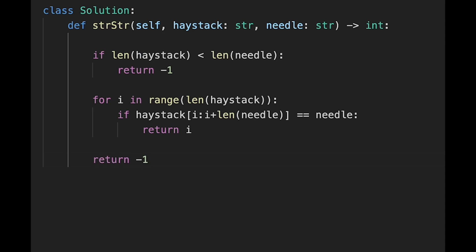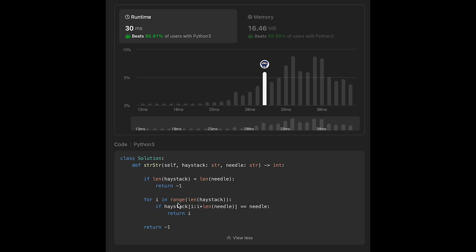The time complexity of this solution should be O(n × m), where n is the length of haystack (the outer loop) and m is the length of needle, because in each iteration we slice the string from current index to current index plus length of needle.